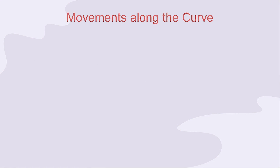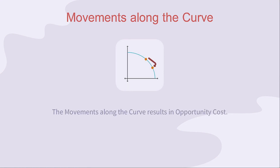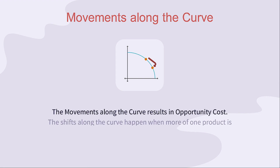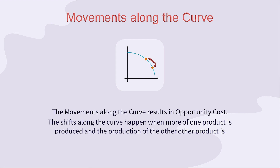Now, we will see the reasons for movements along the curve. The movements along the curve result in opportunity cost. The shifts along the curve happen when more of one product is produced and the production of the other product is decreased.